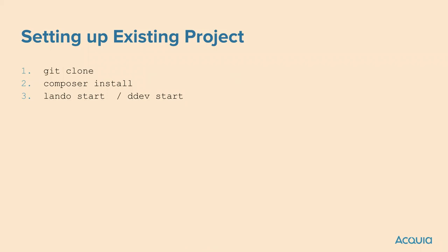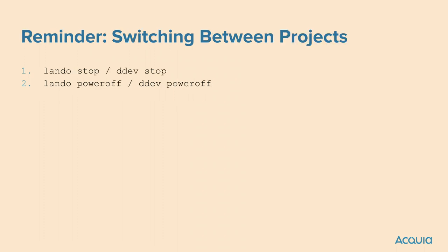There is one gotcha: anytime anybody changes a config file — say today we all start on PHP 8.1 and in a couple of weeks we upgrade to PHP 8.2 — anytime that config file changes, everybody on the team has to reprovision. You can't just change the file; you have to rebuild your containers. That's a pretty small detail. And as a reminder, switching between projects or between containers, you may need to actually stop and or power off.